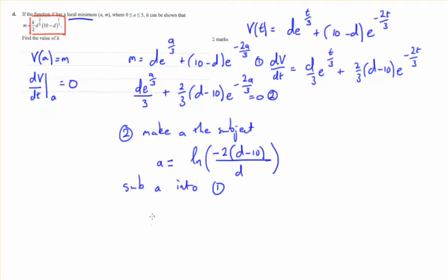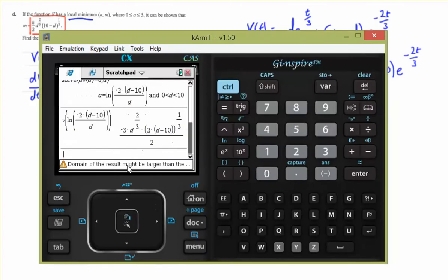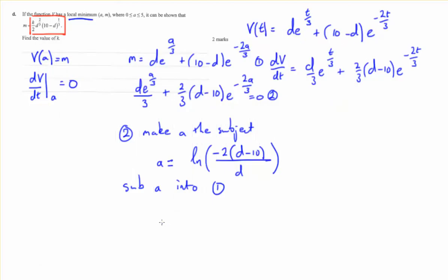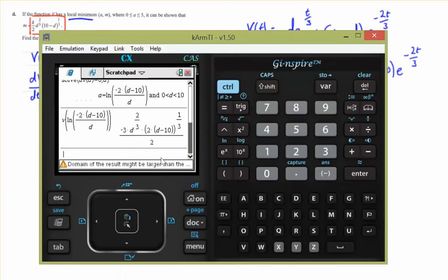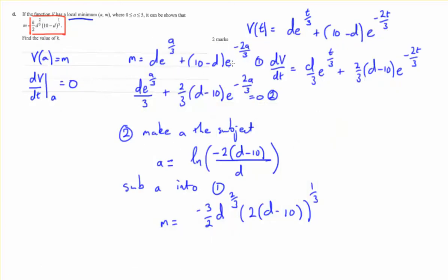The expression we get is M equals negative 3 on 2 D. Oh, apologies. Let's have a look at that expression once again. So we get M equals negative 3 on 2 D to the power of 2 thirds times 2 D minus 10 to the power of a third. I know that's M. There's no M here, but we know that's M because we're dealing with equation 1.